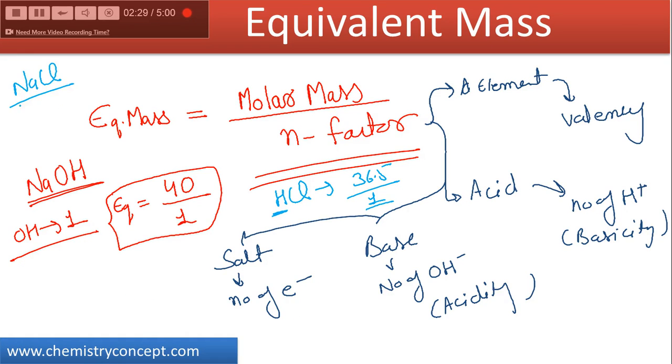and the n-factor would be - molar mass of, equivalent mass would be molar mass of NaCl by n-factor. N-factor, it's a salt and there is transfer of one electron from sodium to chloride, so here n-factor would be one. So again here the equivalent mass would be equal to its molar mass.